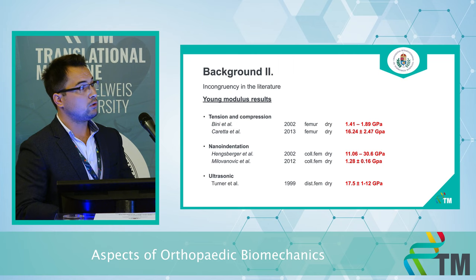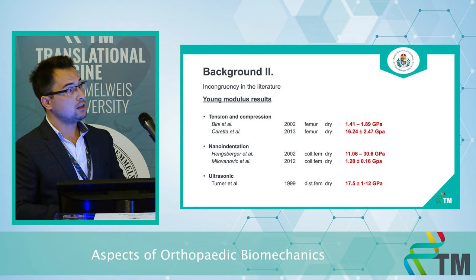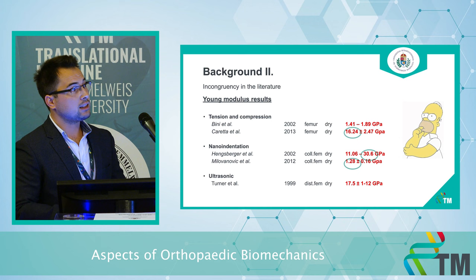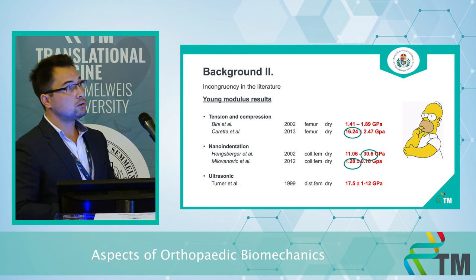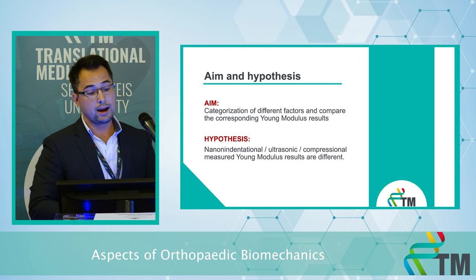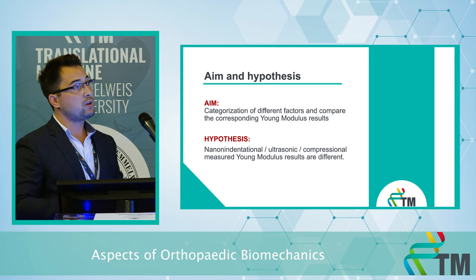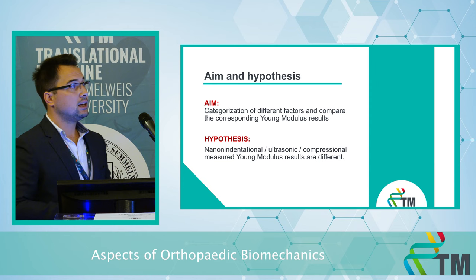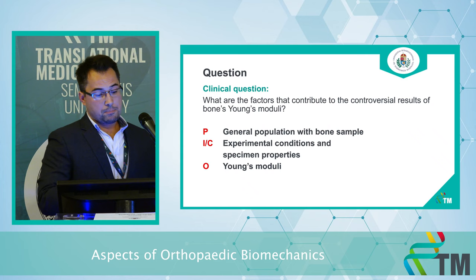On this slide, you can see several methods for measuring, and these are the results in gigapascals of the Young's moduli. What you have to note is that there are differences, and as I mentioned, we need precise Young's moduli results for good calculations. Our aim is to make a categorization of different factors and compare the corresponding Young's moduli results. Our hypothesis is that there is a systematic error, and the source of it is these measurement methods.